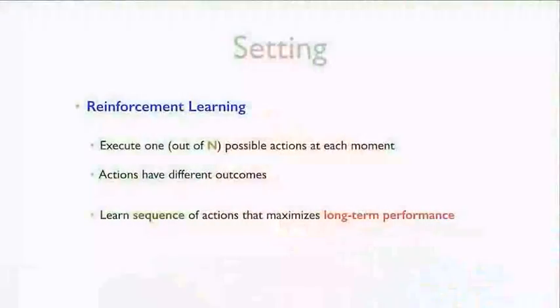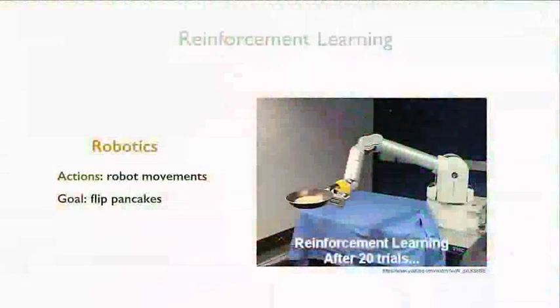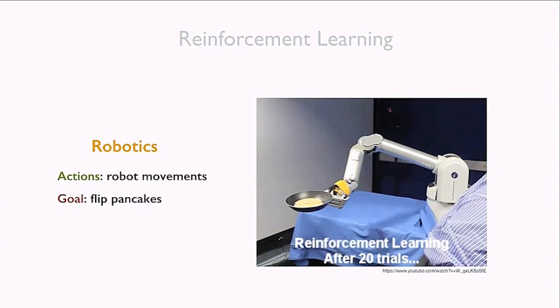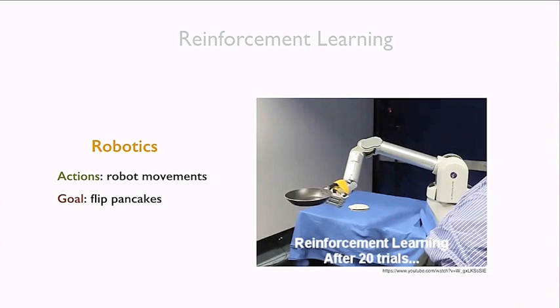In this talk I'll discuss points one and three. We assume reinforcement learning problems — basically the problem of how to select actions. An agent can select one action out of many at every time step, and the goal is to select a sequence of actions that maximizes some measure of long-term performance. Classic applications include robotics — for example, a robotic arm learning to flip pancakes through a trial-and-error process.